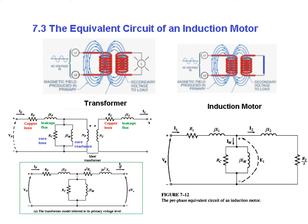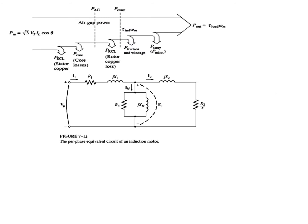This circuit is for the induction motor — it is almost a similar circuit. This is the rotor part and this is the stator part. If we correlate with the power flow diagram, we have the input power, then the stator copper loss, then the core loss. Following through: this is the input, this is due to the stator copper loss, this is due to the core loss, and then the power available is called the air gap power. In the air gap power, if we subtract the copper loss, we get the power converted.